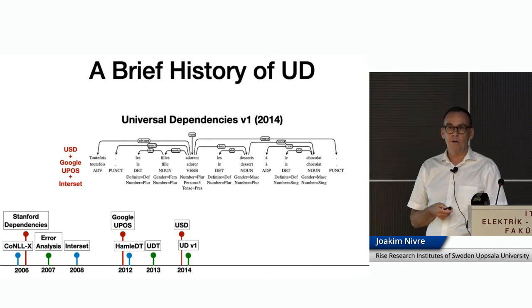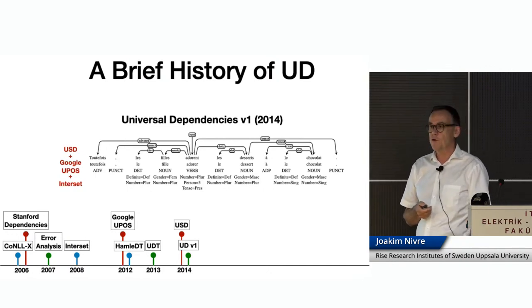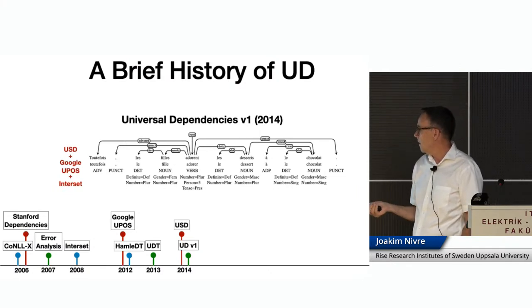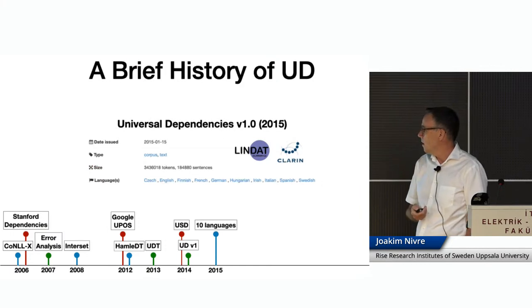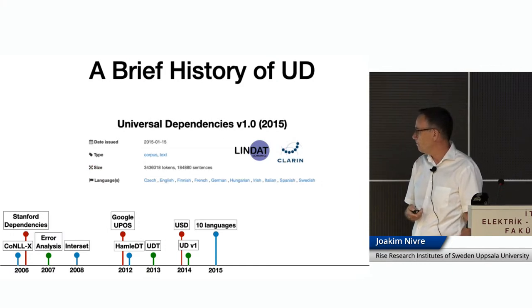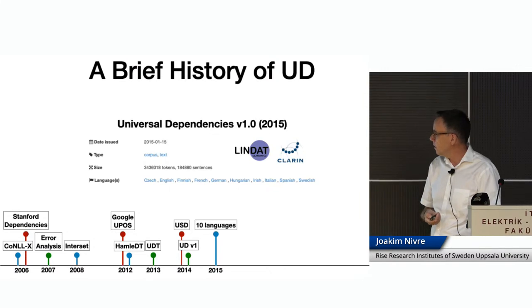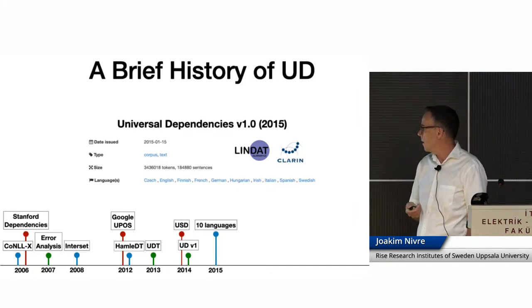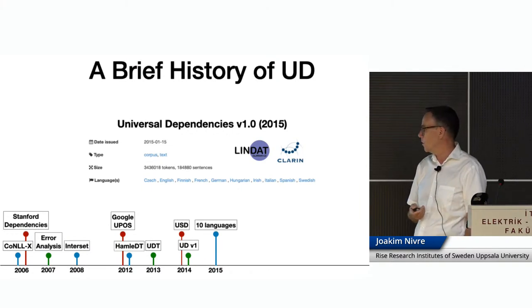In January of the following year we had the first release of data — only 10 languages and 10 treebanks — but it was the first milestone. In 2016, we had the second release of the guidelines, where we tried to fix the most obvious mistakes in the first version. And then 2017 turned out to be a really productive year for Universal Dependencies.